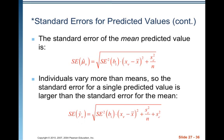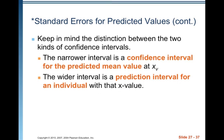You have to add in another term of the standard deviation of the error squared — the standard deviation of your residual squared. Keep in mind the distinction between the two kinds of confidence intervals. The narrower interval is a confidence interval for the predicted mean value at xv. The wider interval is a prediction interval for an individual with that x value. The confidence interval is for the average response; the prediction interval is for a particular individual. If you keep your confidence level the same for both, the wider interval will be for an individual and the narrower interval will be for the mean response.